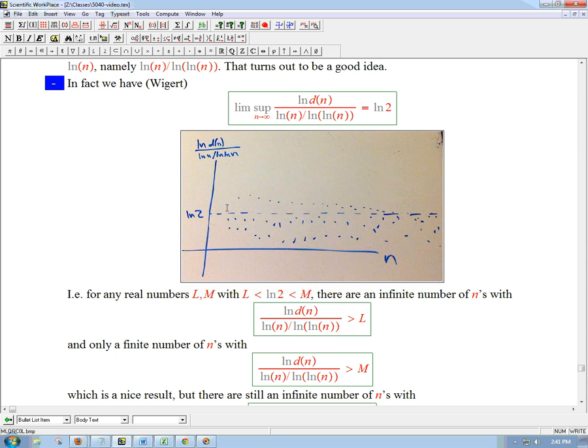It says that we will keep butting up from below against ln2. There will be an infinite number of n's that approach, that get close to the magic number ln2 from below. So they're in the lower part of the band, between l and ln2. So it means that we keep going up until that. We're getting close to ln2 from below.